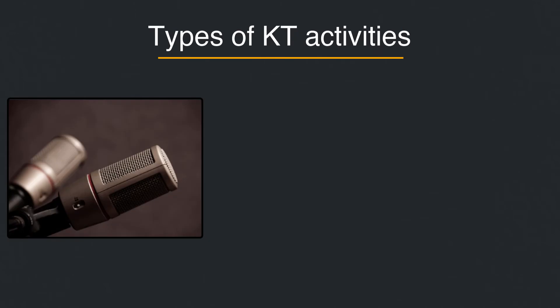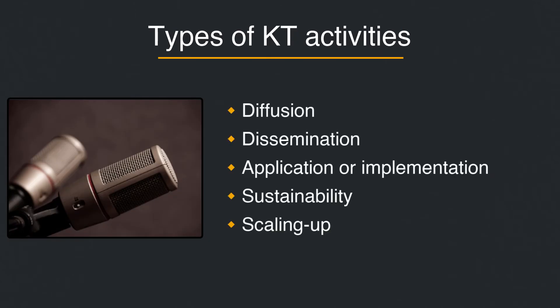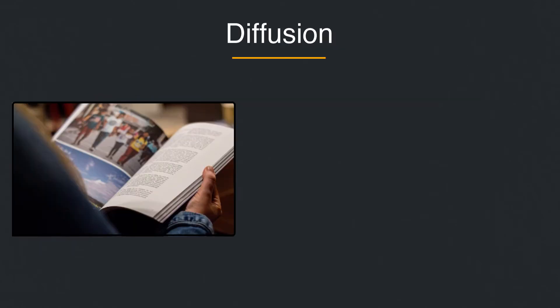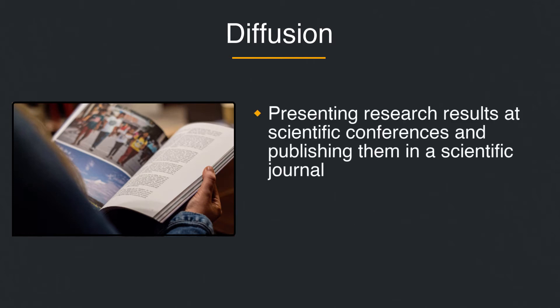There are different types of knowledge translation activities. These are diffusion, dissemination, application or implementation, sustainability, and scaling up. Diffusion is usually the first step in an overall KT plan. It refers to presenting research results at scientific conferences and publishing them in the scientific journal.